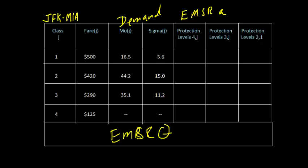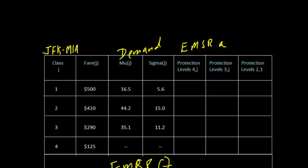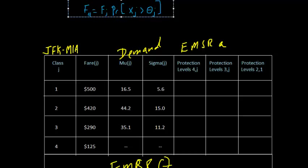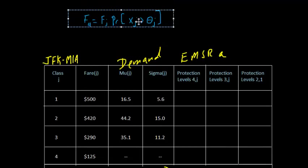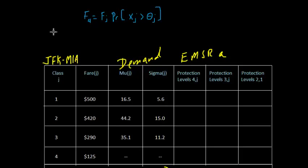Hi and welcome back. Now we're ready to calculate EMSR protection levels using Littlewood's rule. Let me write Littlewood's rule up here so we have it to refer to. I've already gone ahead and copied it onto the clipboard. I've changed the notation just a little bit so that it refers to this column here. So we're first going to calculate the protection levels for this column.